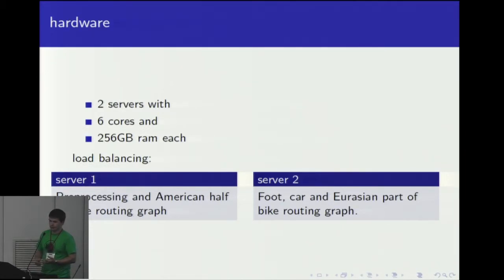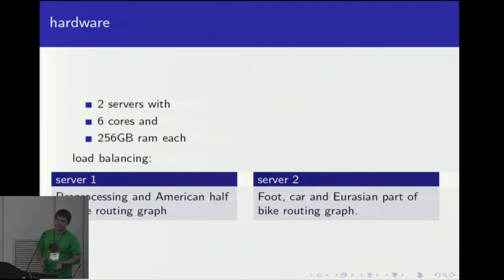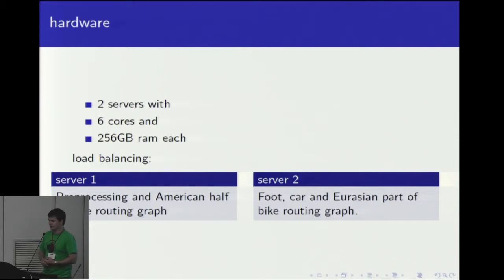This routing needs quite a bit of hardware. It runs on two servers. Both have six cores and 256 gigabytes of RAM. One server is mainly concerned with preprocessing, and the other server will deliver the routing results.